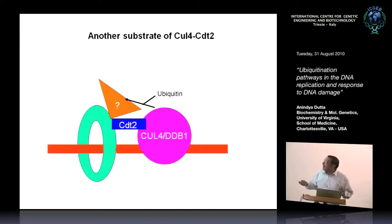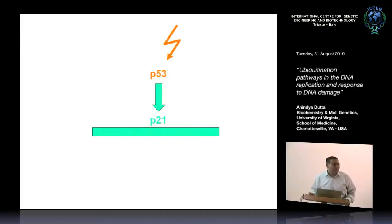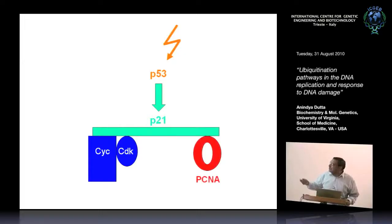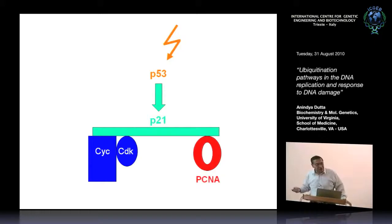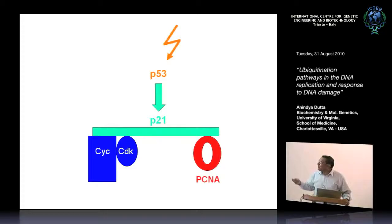This is a very odd phenomenon: a substrate protein interacting with PCNA and being degraded. So naturally you start wondering, are there other substrates being used in that way? I knew my favorite substrate, P21. One of my initial papers showed that P21 interacts with cyclin-CDK using its N-terminal portion, and the C-terminal portion interacts with PCNA. We couldn't find any function for this PCNA interaction. So we wanted to ask whether P21's interaction with PCNA is important for it to be degraded by the CUL4-CDT2 complex.